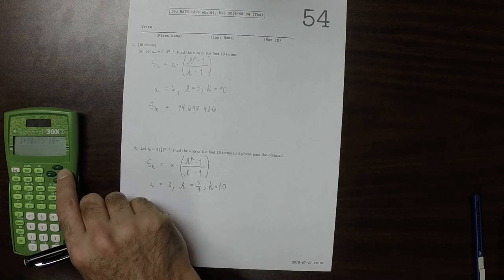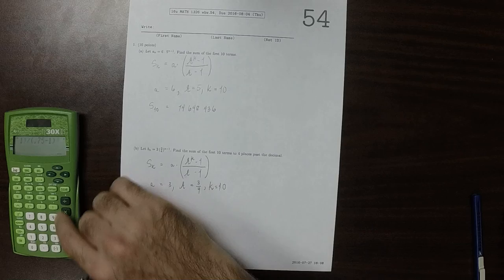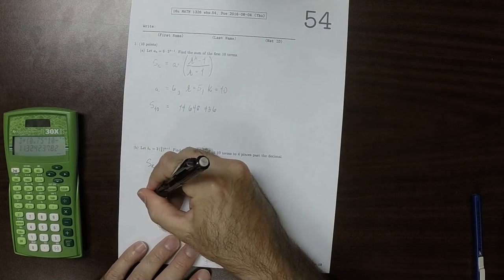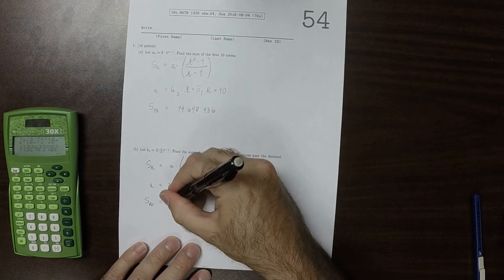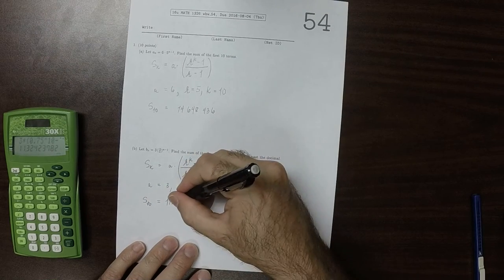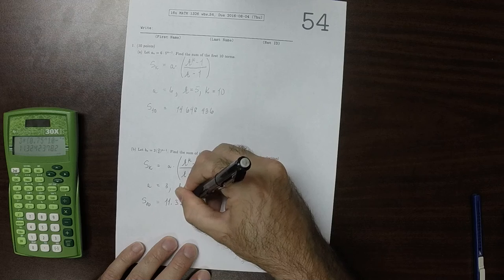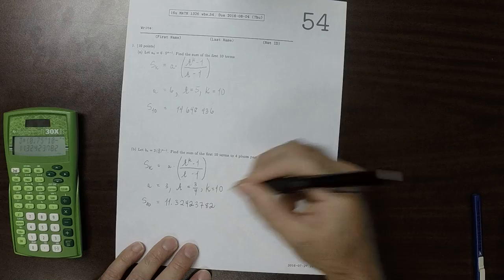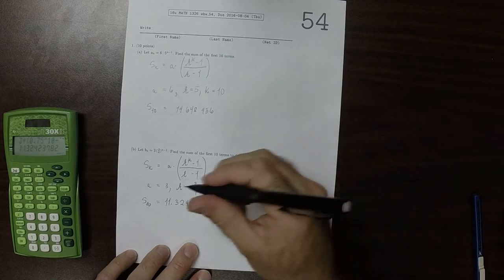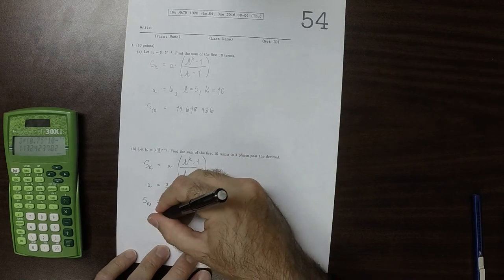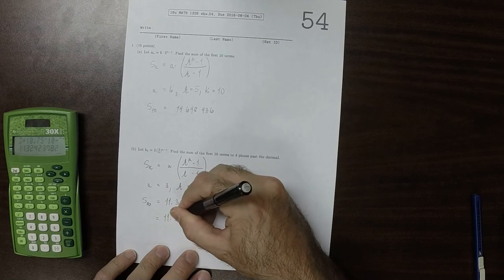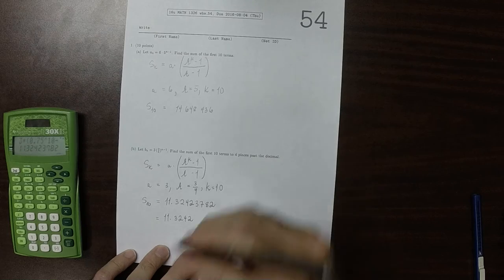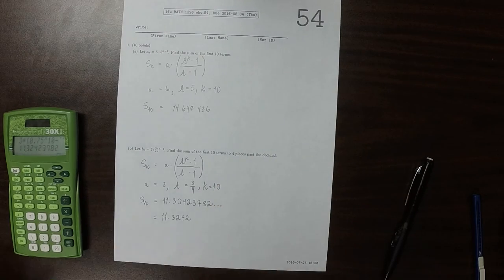We wanted to do that to at least four places past the decimal. The calculator is reporting that S10 is 11.32423782. So to four places past the decimal, that's 11.3242. And that's the answer.